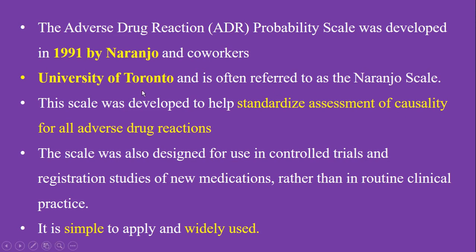Let us see some background information about the probability scale. The Adverse Drug Reaction Probability Scale was developed by Naranjo and his co-workers in 1991 from the University of Toronto, and is often referred to as the Naranjo Scale. This scale was developed to help standardize assessment of causality of all adverse drug reactions, and can also be designed for use in controlled trials as well as registration studies of new medications. The Naranjo Scale is very simple to apply and is widely used across the globe.